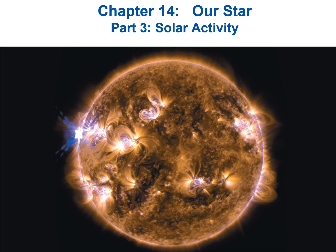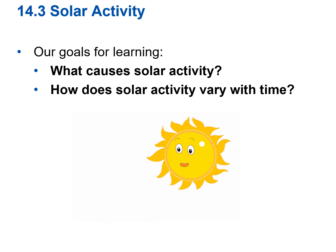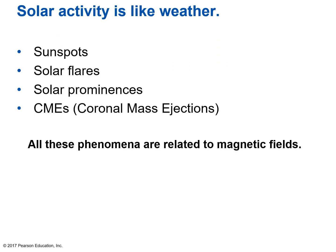Hello, welcome back to Astronomy. This is Chapter 14 on Our Star, which of course is the Sun, and this video is Part 3: Solar Activity. Our goals for learning: what causes solar activity, and how does solar activity vary with time? Solar activity includes such things as sunspots, solar flares, solar prominences, and coronal mass ejections. In this video, I'm going to describe these four phenomena.